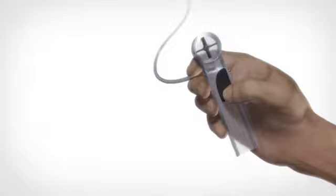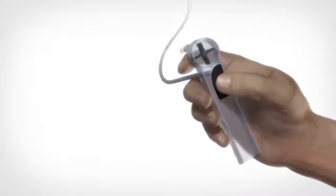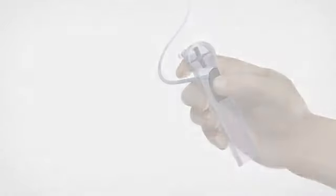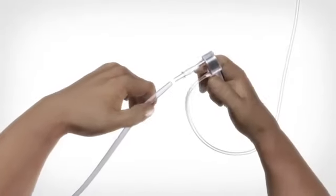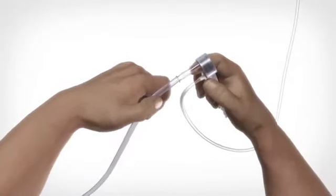Start by making sure that the flow regulator is completely closed. Connect the tube on the cone to the flow regulator.